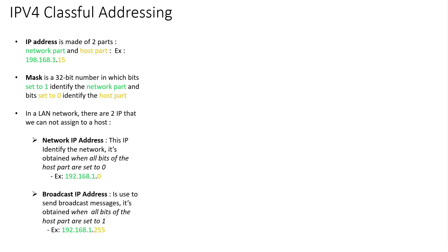In a local area network, there are two IP addresses that we cannot assign to a host. The first IP is the network IP address. This IP identifies the network. It is obtained when all bits of the host part are set to 0. The next IP that we cannot assign to a host is the broadcast IP. This IP is obtained when all bits of the host part are set to 1. In this example, this IP is a broadcast IP because all bits of the host part are set to 1, which is equal to 255 in decimal system.